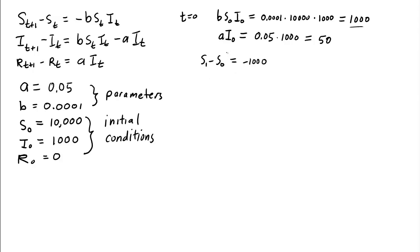In other words, well, what do we know? What's S0? S0 is 10,000, right? So S1 is 1,000 fewer than that, and S1 is therefore just 9,000. So we're left with only 9,000 susceptible individuals at time 1.